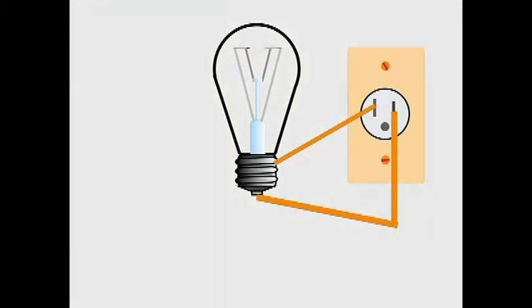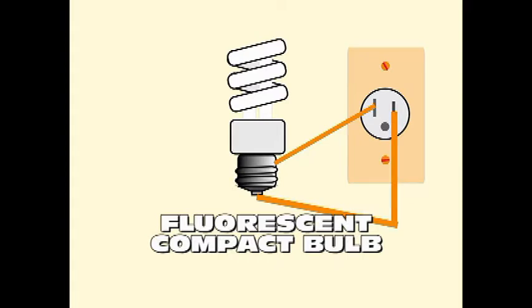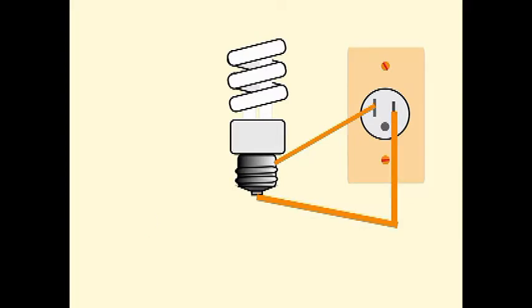The first significant advance was the invention of the fluorescent lamp, which could be manufactured in compact size and at an affordable price. However, this type of lamp also had some drawbacks.